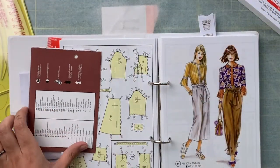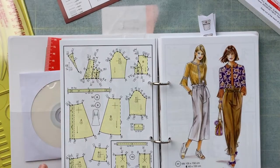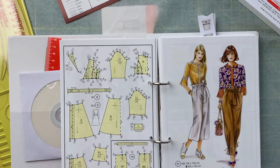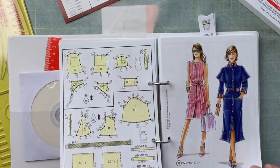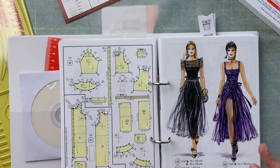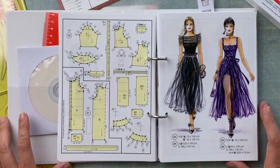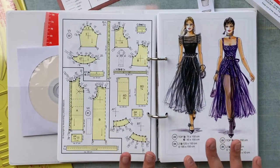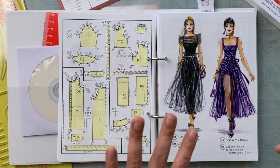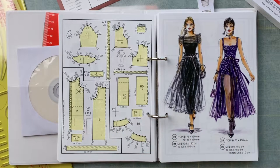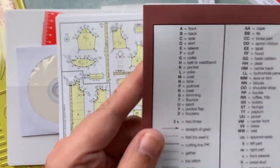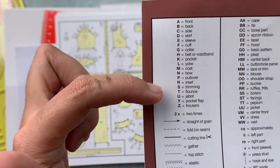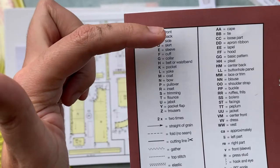First things first, we need to pick out which pattern we are going to make. Flipping through the book there are so many cute choices, but I wanted to point out a couple of things to help you identify a good project for your sewing level, and it all corresponds to this little chart. You can see on here that there is a letter that corresponds with different pattern pieces, and then there's double letters that indicate the type of garment that is.